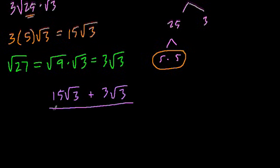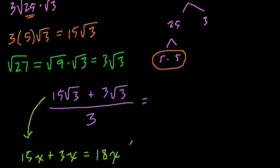All over 3. So I'm going to solve the numerator first. I think of this almost like we have 15x plus 3x. That would be what? Well, that would be 15 groups of something plus 3 groups of something, right? We're adding these groups. We have 18 groups of something.